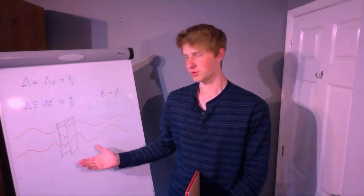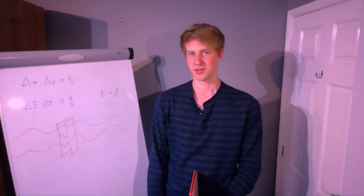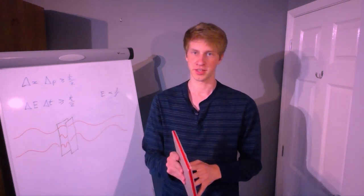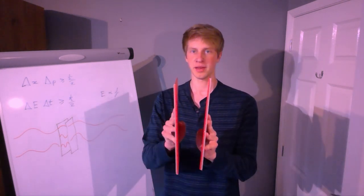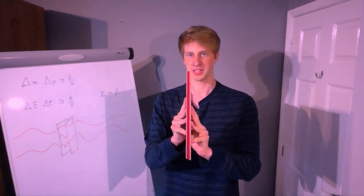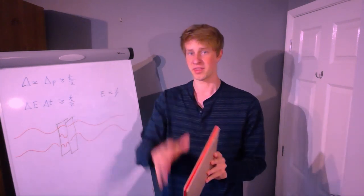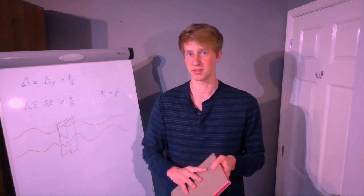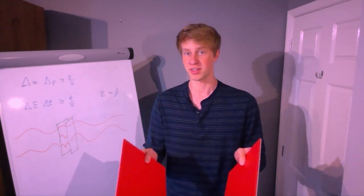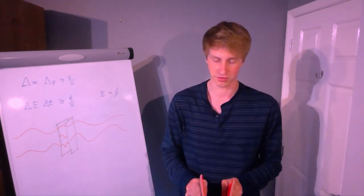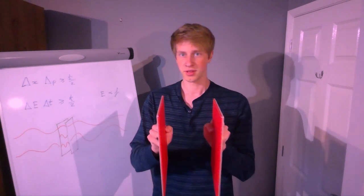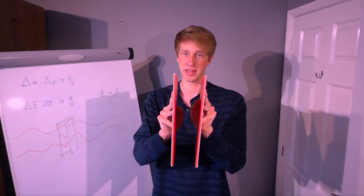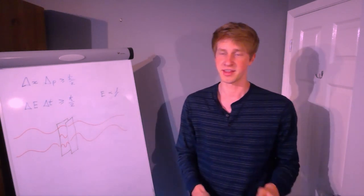Today we're going to be talking about something called the Casimir effect. The Casimir effect is a force that occurs between two parallel plates in a vacuum that pushes them together, even without any external force present. It comes about due to the fact that quantum vacuum fluctuations, which I will explain later on in the video, create an area of negative energy density between the two plates, and that's what pushes them together.